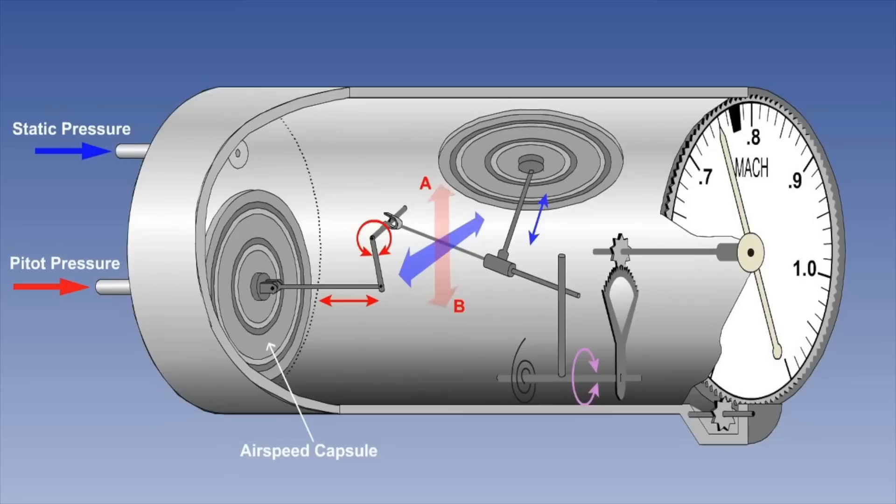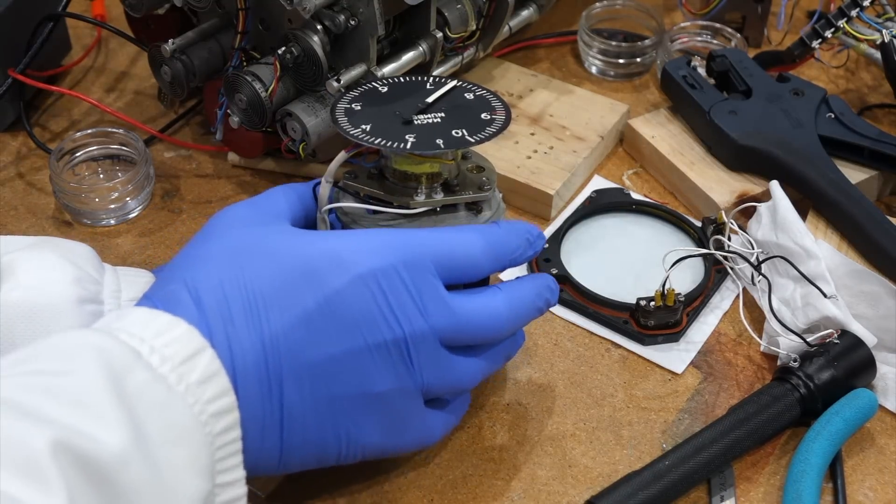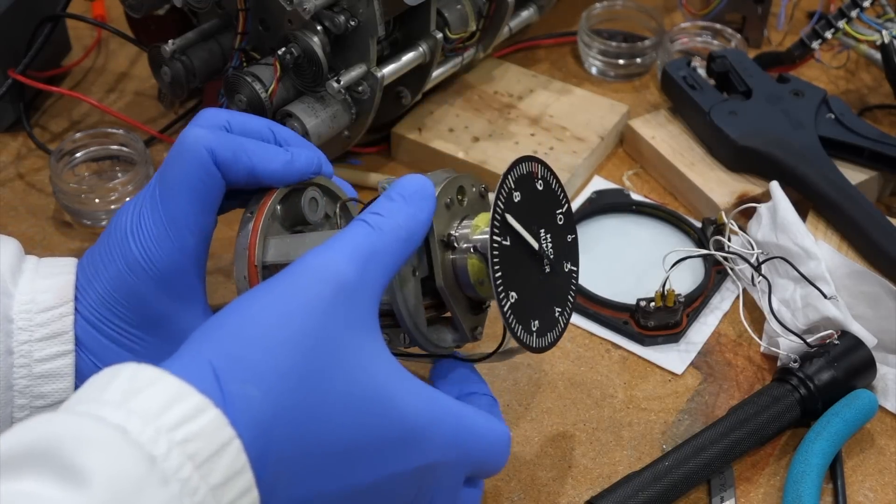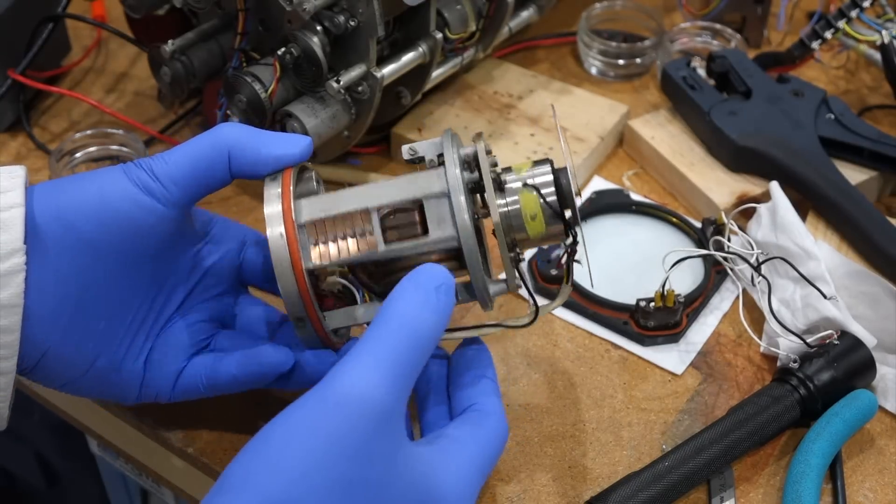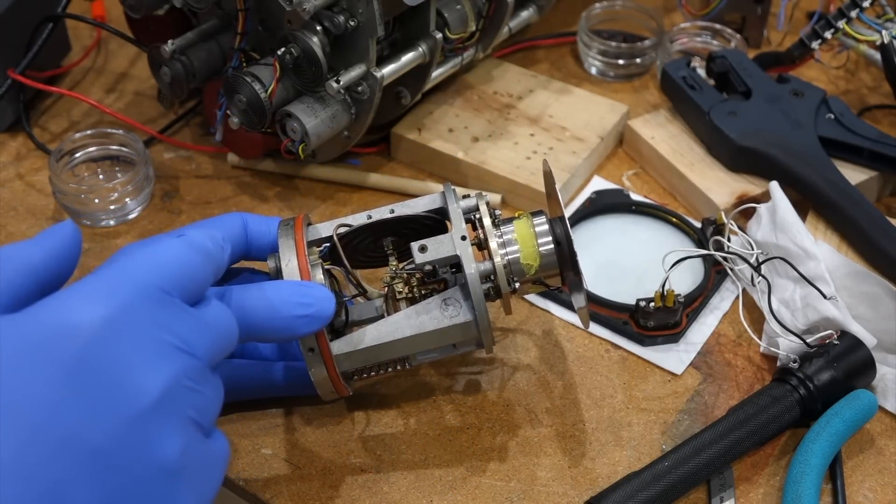Speaking of the Mach number, you can also get that by dividing the dynamic pressure by the static pressure, something you can do mechanically. This time, it takes two barometric capsules, one for each pressure, and a clever lever arrangement to calculate the proper ratio. We will also dig into a Mach meter in a future episode, and you can clearly see the two barometric pressure capsules inside.